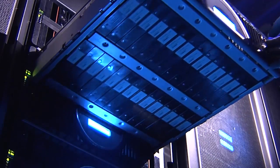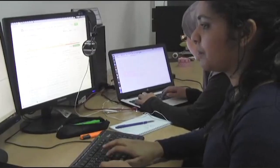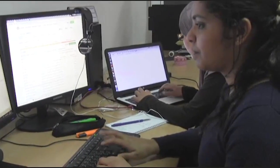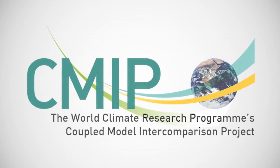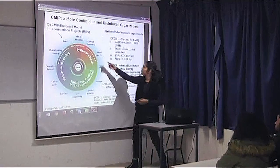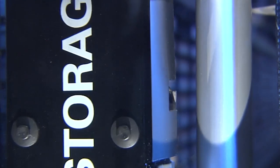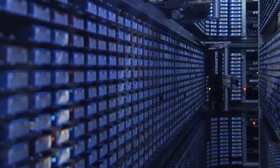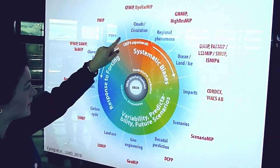The World Climate Research Program organizes an intercomparison project so that scientists can share and compare their models. We call this CMIP, the Coupled Model Intercomparison Project. It involves more than 30 groups around the world, more than a thousand researchers, and probably produces on the order of 20 to 40 petabytes. CMIP also sets standards and specifies experimental protocols.